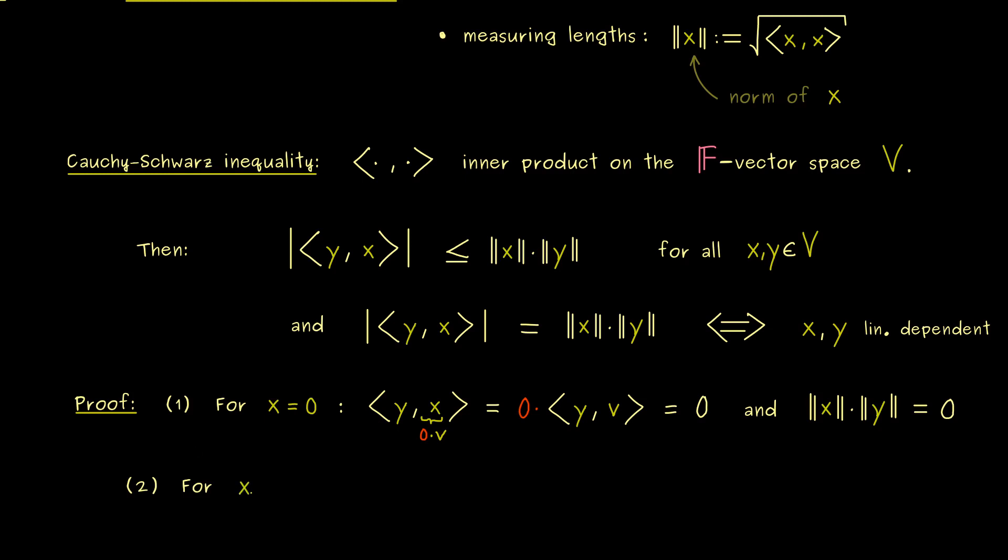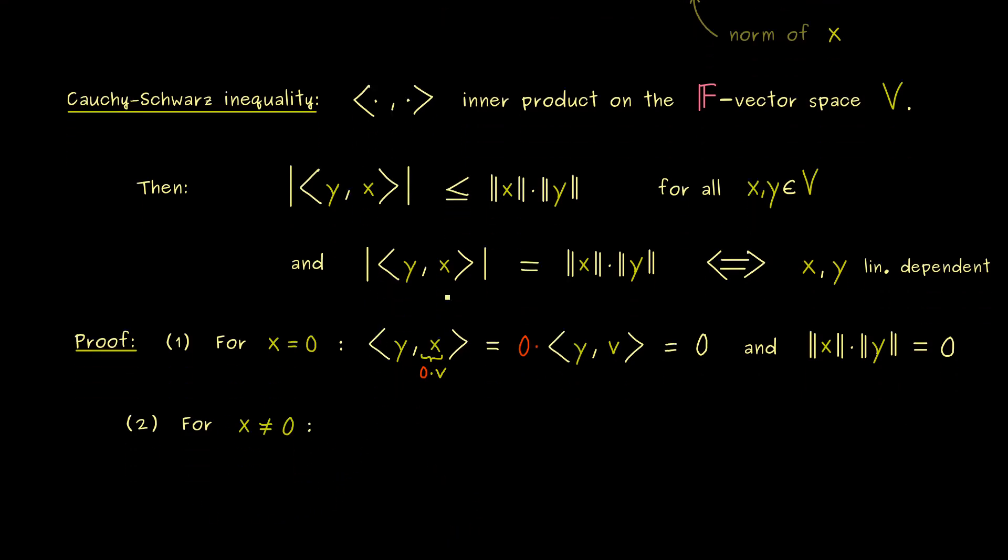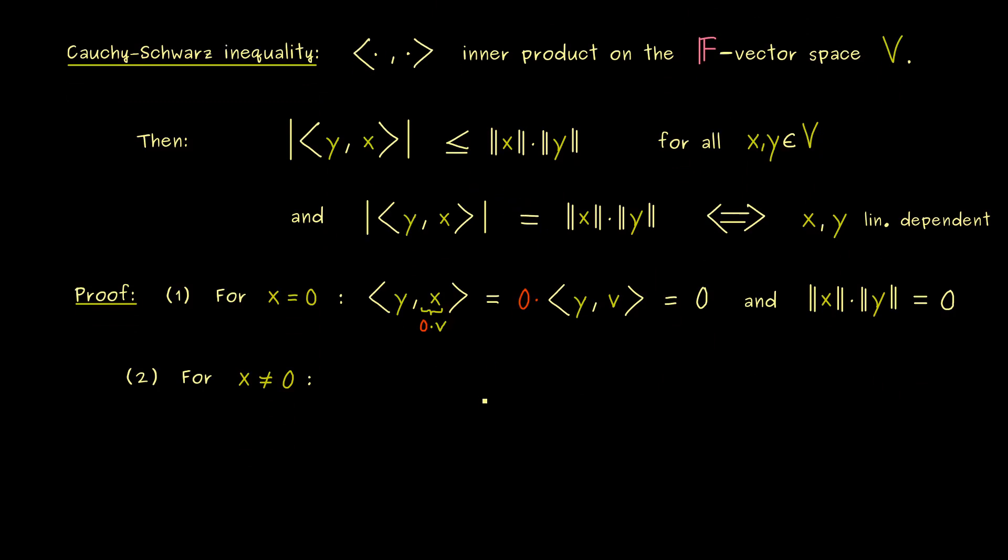So in the second case, x will be not equal to the 0 vector. So this is the general case and now we are allowed to divide by the norm of x if we want. And indeed, if we do that on both sides of our Cauchy-Schwarz inequality here, the whole inequality looks a little bit simpler. Simply because we can pull in this scalar into the second factor of the inner product. And then we only have the norm of y on the right hand side. And if we want, we can call this new vector in the inner product x hat.